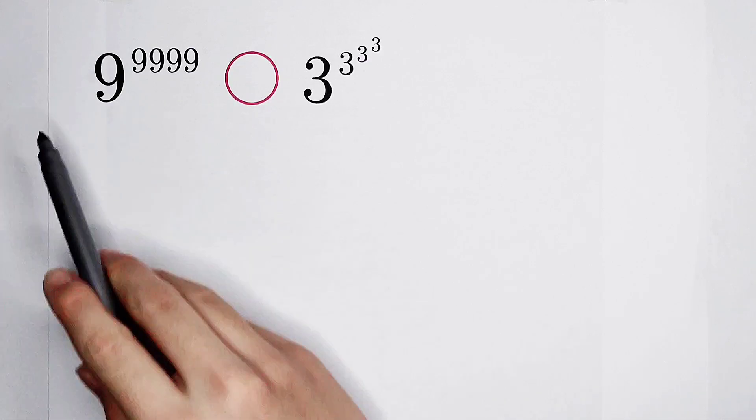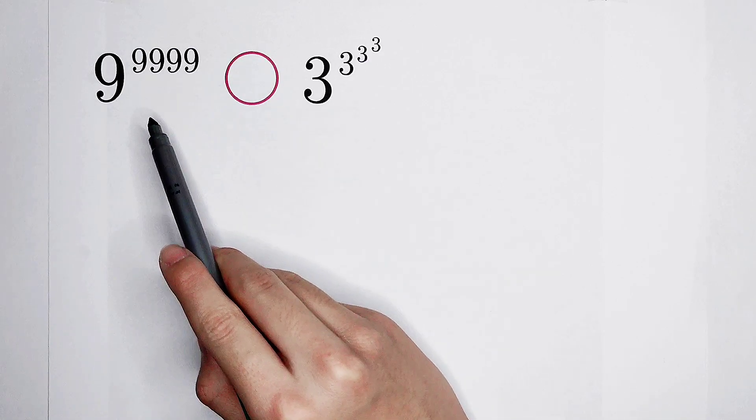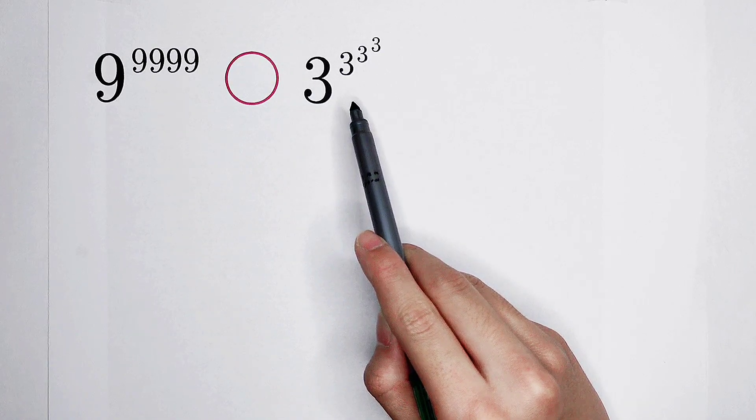Welcome back to Math Winnow. Comparing which is larger, 9 to the power of 9999, or 3 to the power of 3 to the power of 3 to the power of 3?